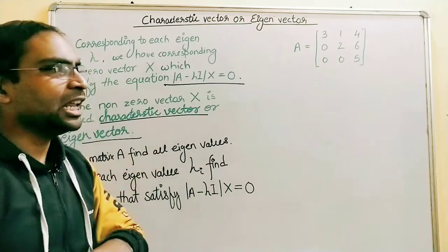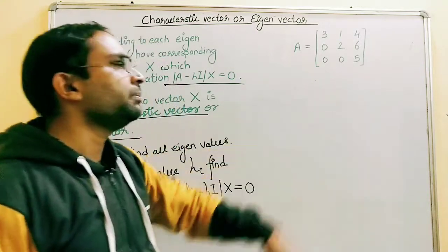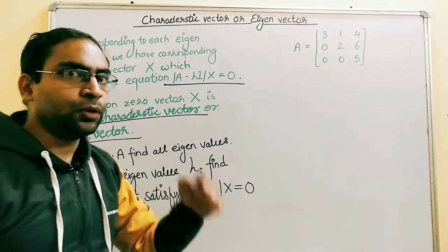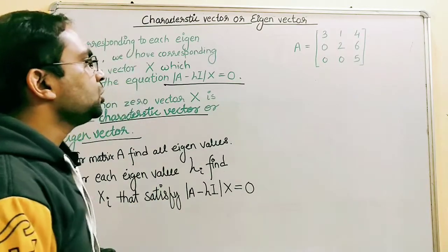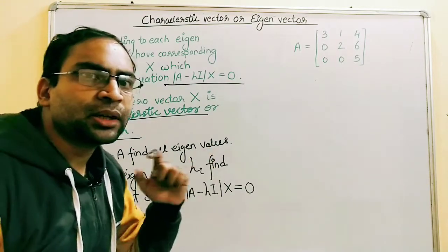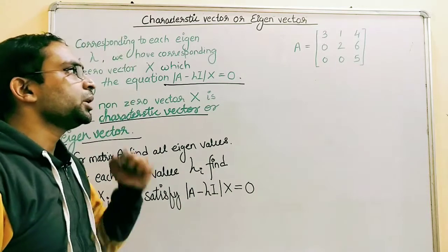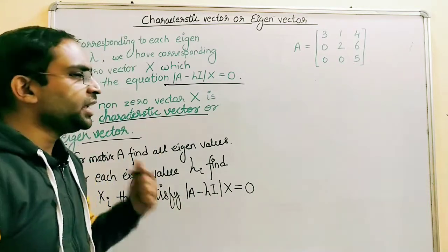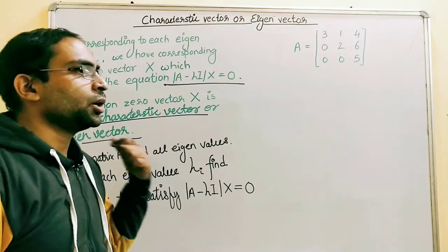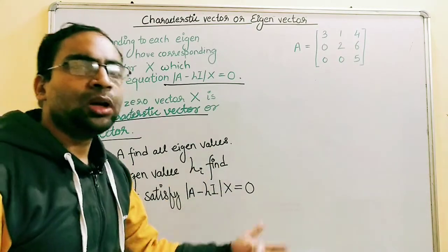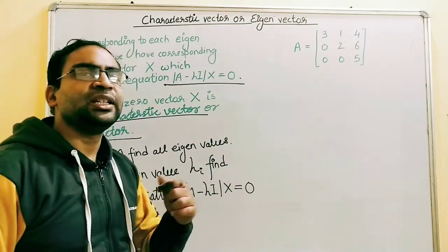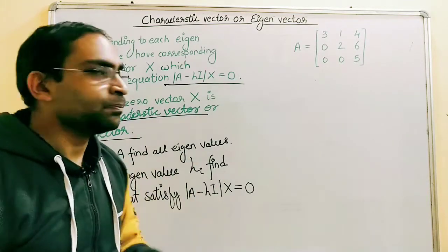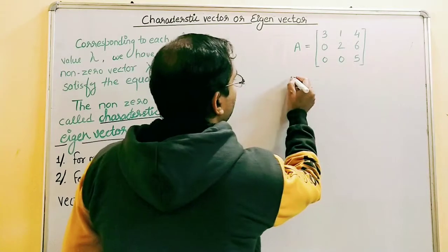Let's see this with the help of an example. We have a matrix A. To get the eigenvalues, we need to find the characteristic matrix, then expand it with respect to any row or column to get the characteristic equation, and on solving that equation we get all the characteristic roots. Let me write the characteristic matrix.